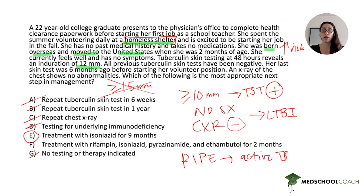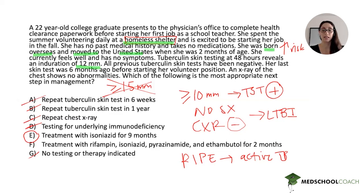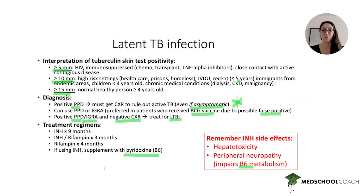Latent TB and TB in general are very high yield on the exam. Be familiar with the different risk categories and thresholds for interpreting the PPD. Key points: a positive PPD requires a chest X-ray even if asymptomatic; a negative chest X-ray with a positive PPD means treating for latent TB (isoniazid for nine months); a positive chest X-ray means treating for active TB. If a BCG vaccine history is present and the option is available, choose the QuantiFERON-Gold or IGRA. Remember your isoniazid side effects. That wraps up our question of the week — thanks for listening.